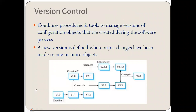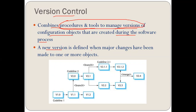Next is version control. Version control means combining the procedures and tools to manage the versions of configuration objects which are created during the software process. The basic agenda of version control is to combine the procedures and manage the versions being created. A new version is defined when major changes have been made to one or more objects. For example, a change gives version V1.0. Minor changes result in V1.1, V1.2, and so on. If there is a major change, a new version V2.0 is assigned. This is called version control.